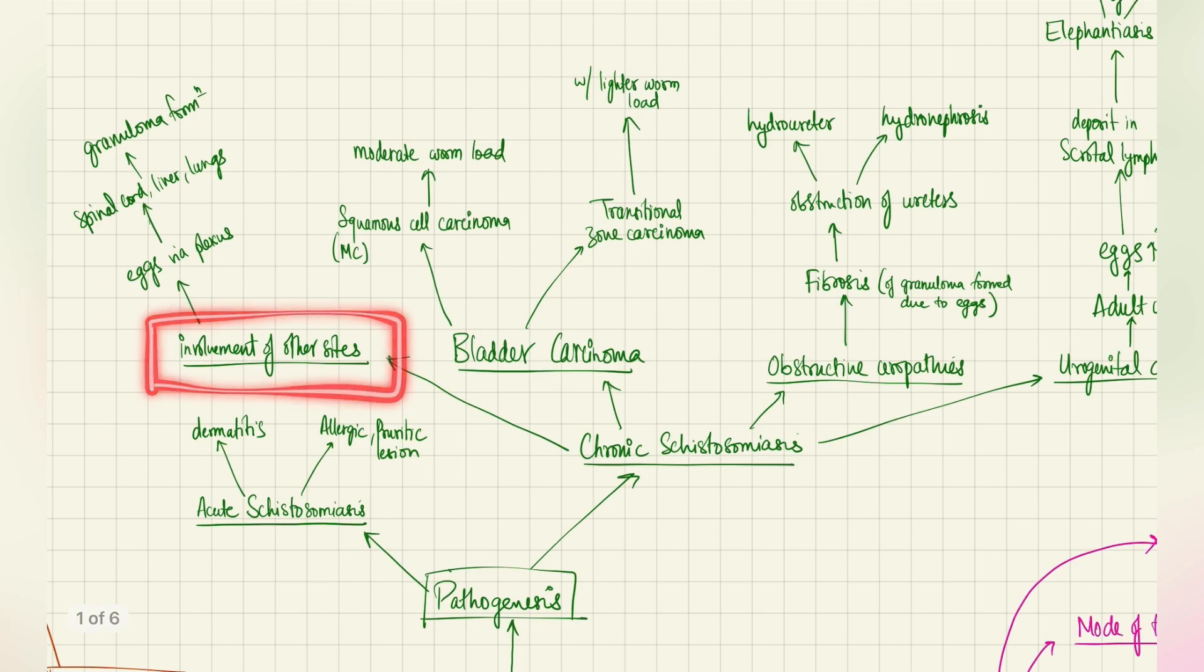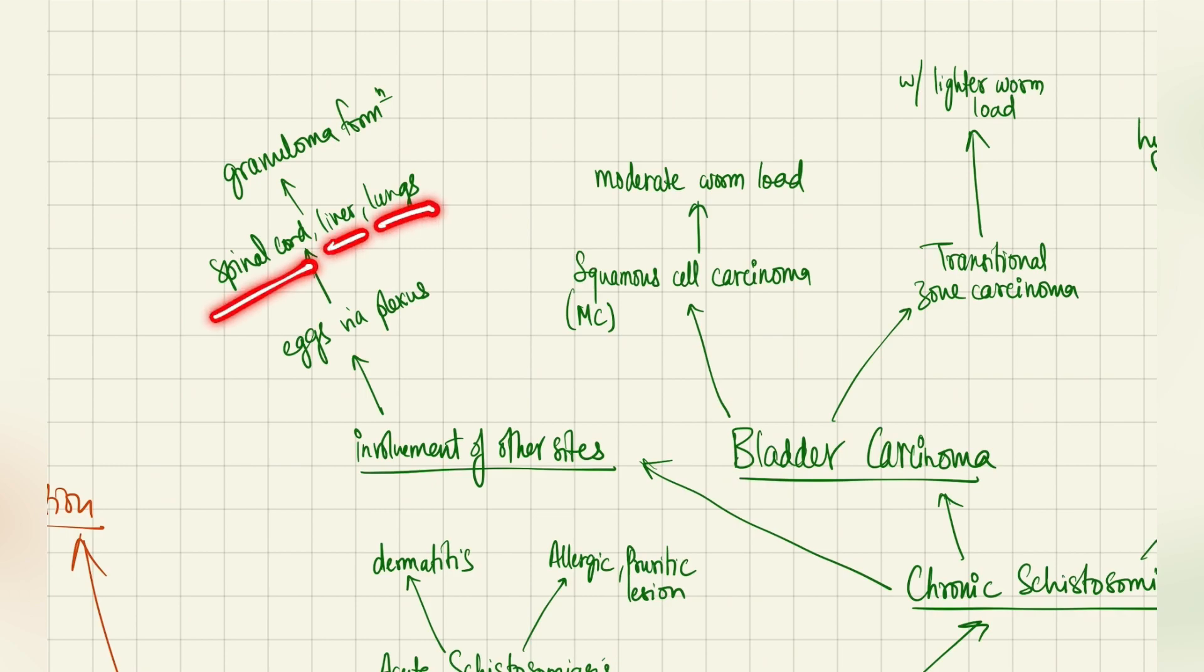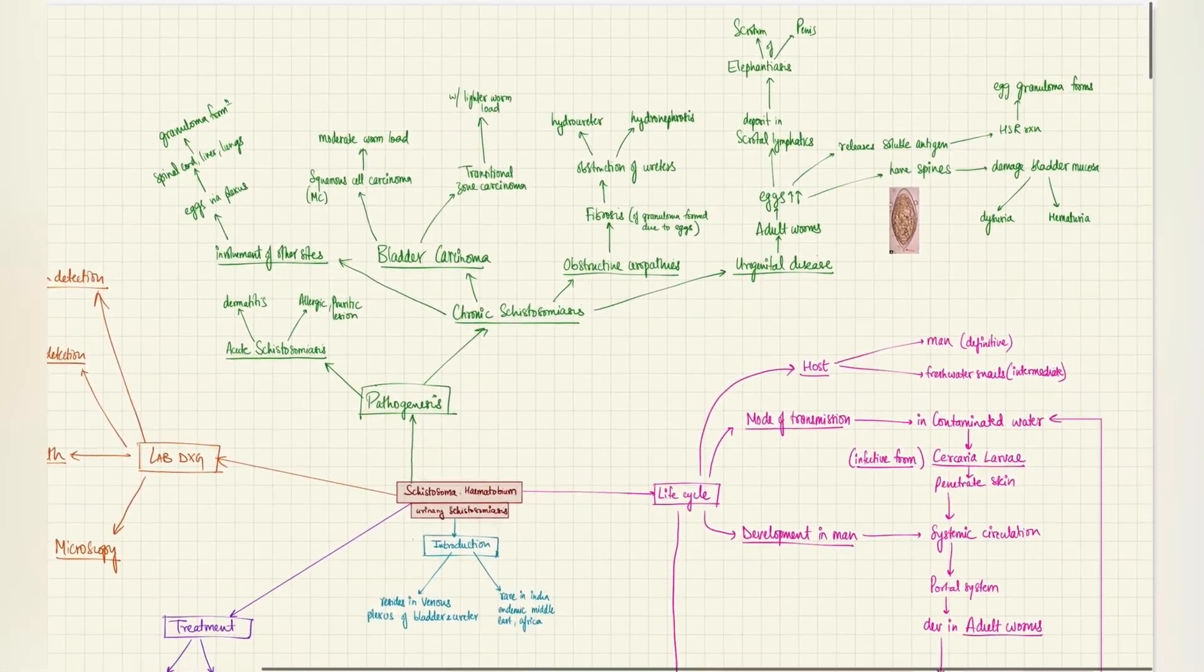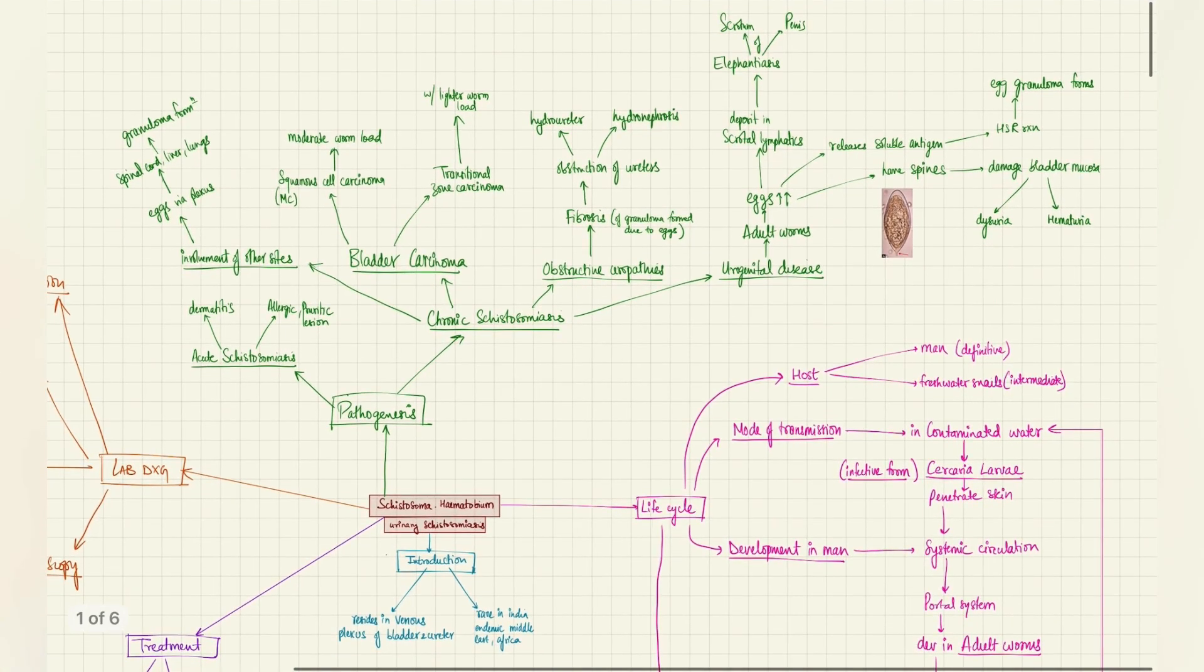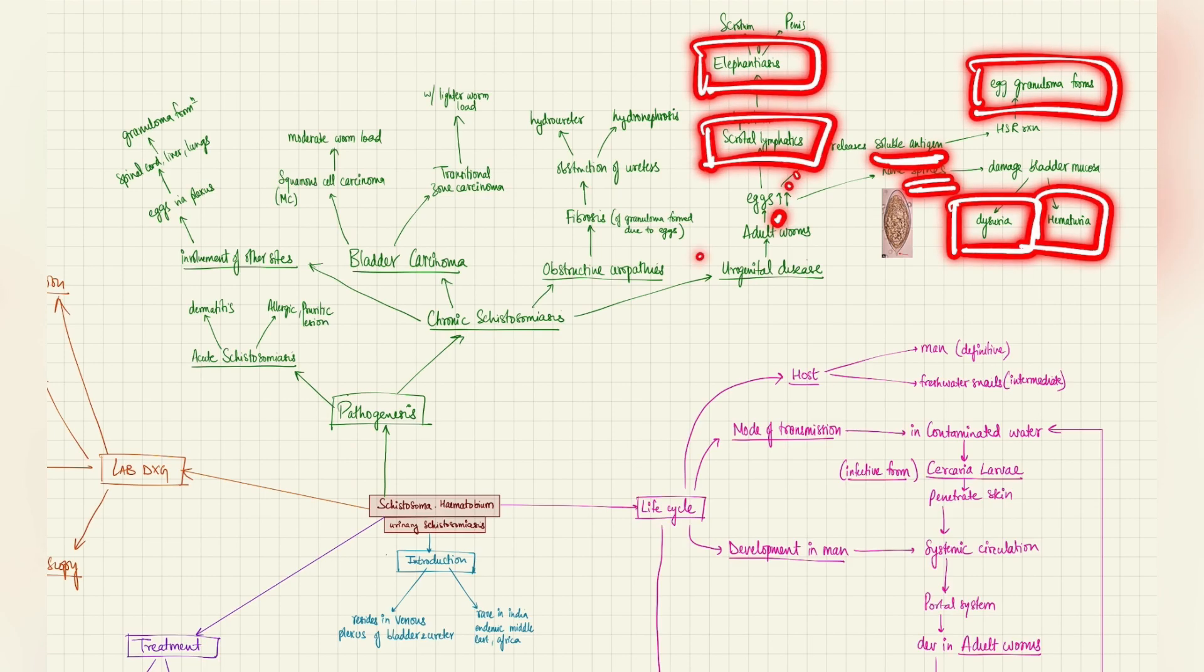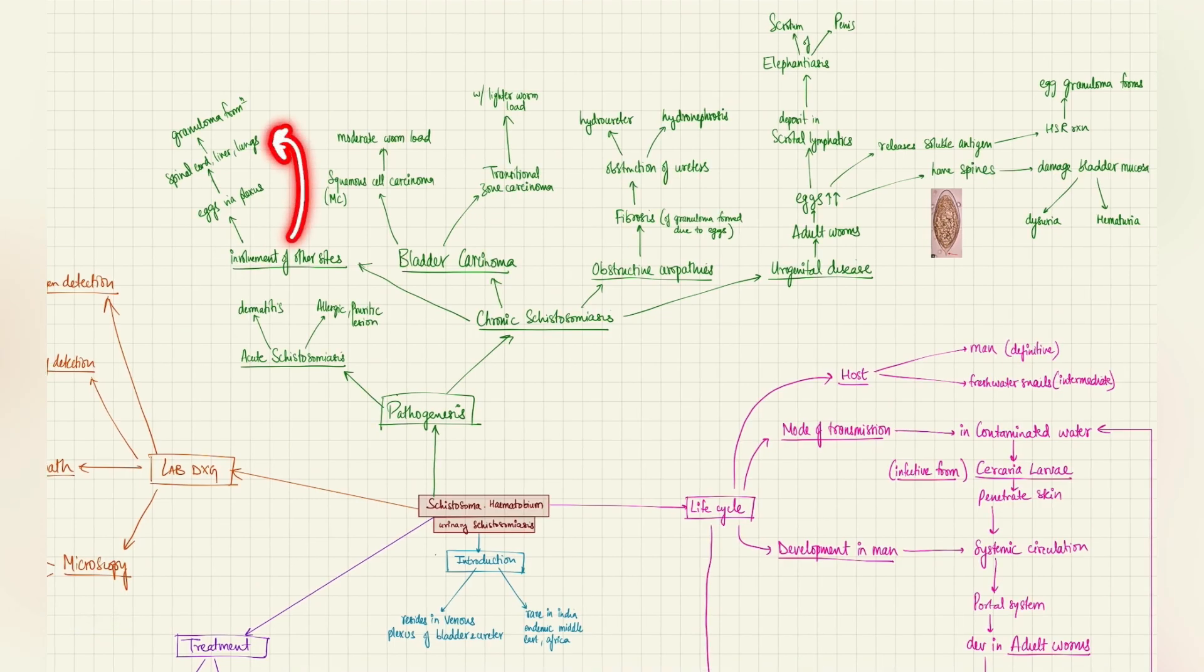Finally, coming to the involvement of other sites. There might be involvement of other sites like via the plexus, they may get access to the spinal cord, liver, or lungs, which are the other sites. Via the plexus, they may access these sites and form granuloma there as well. This can result in other extra manifestations. So these are the main pathogenesis of the parasite. We saw definitely because of the eggs, we saw dysuria and hematuria because of the spines. Because of the antigen, we saw granuloma formation. In the lymphatics, we saw elephantiasis because of the obstruction. We also saw hydroureter and hydronephrosis because of the obstruction of the ureters. We saw squamous cell carcinoma risk, which is a bladder carcinoma. And there might be involvement of other extra urinary sites like spinal cord, liver, lungs, where granuloma formation might occur.